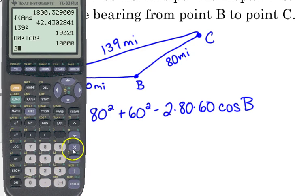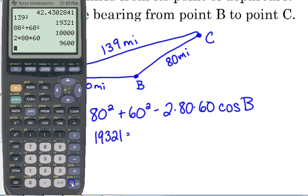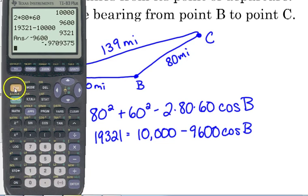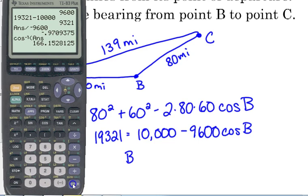So we've got 19,321 is equal to 10,000 minus 9,600 cosine of B. 19,321 minus 10,000 divided by negative 9,600. And we do the inverse cosine. So we get B is approximately 166.153 degrees.